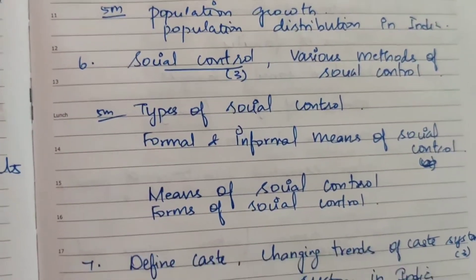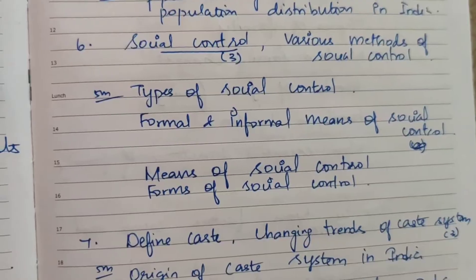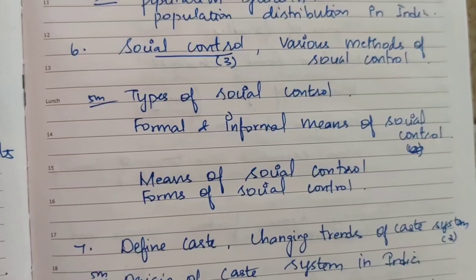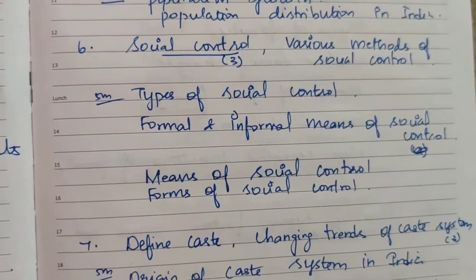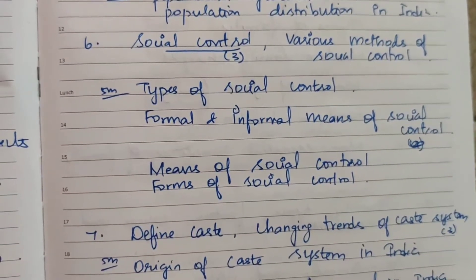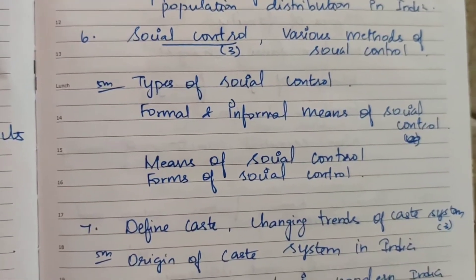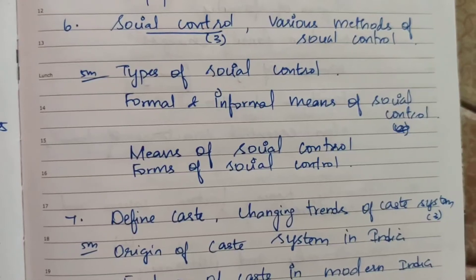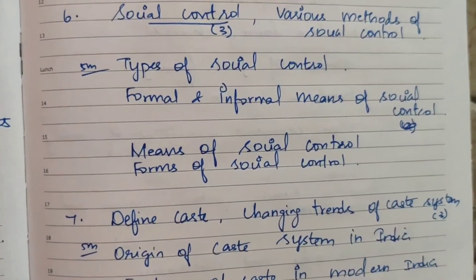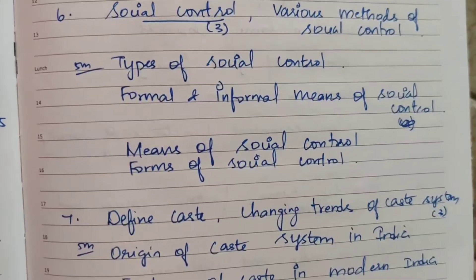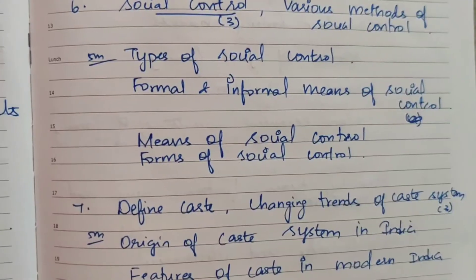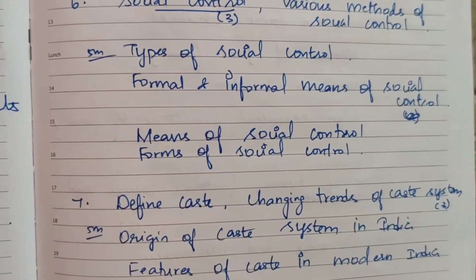Sixth question: Social control. Various methods of social control — asked for 15 marks and 5 marks. Types of social control, formal and informal means of social control, means of social control, and forms of social control are all related questions under this topic.